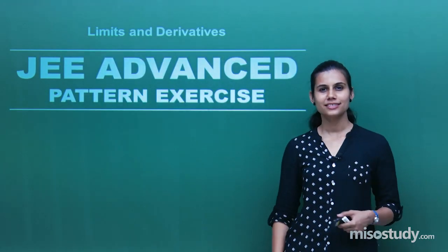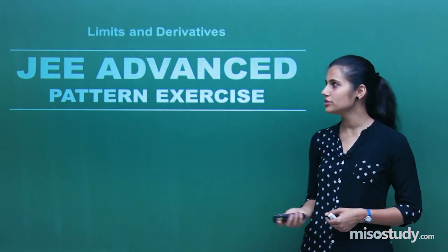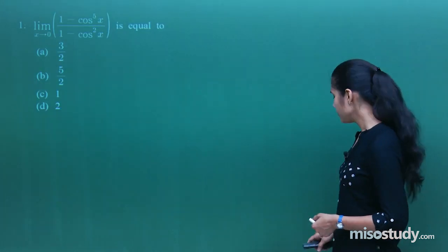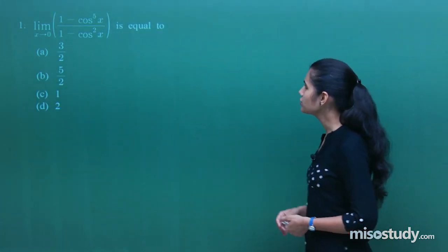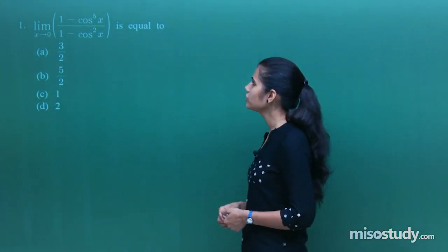Let us begin the discussion over the questions. The first question says: limit x tends to 0 of this expression is what?